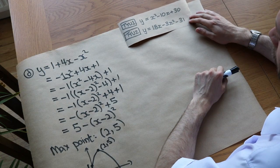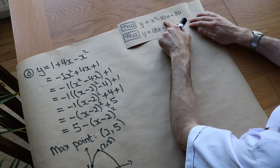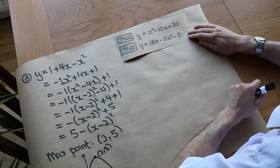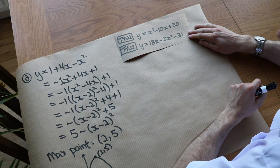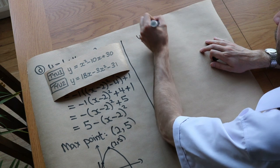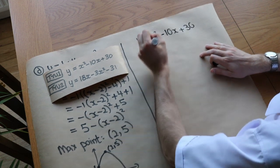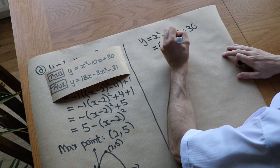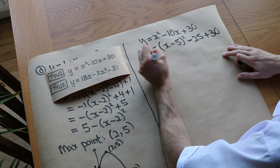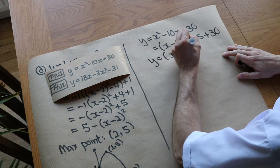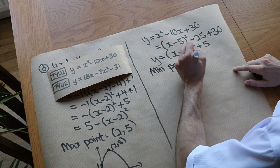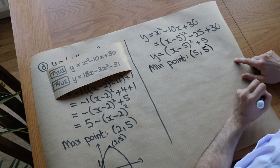Now some practice questions. Find the minimum or maximum point of: y equals x squared minus 10x plus 30. Completing the square: (x − 5)² − 25 + 30 equals (x − 5)² + 5. So the minimum point is (5, 5).